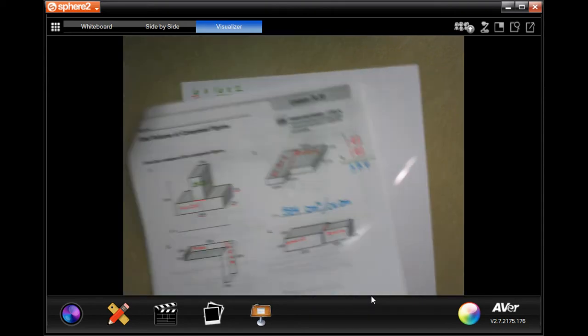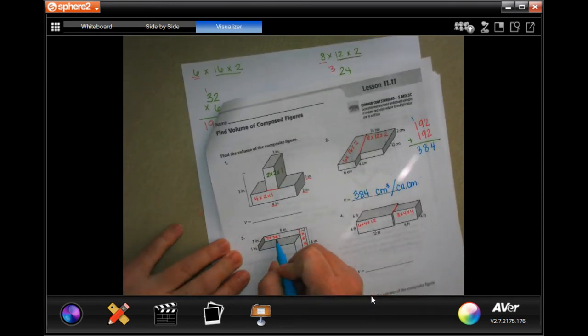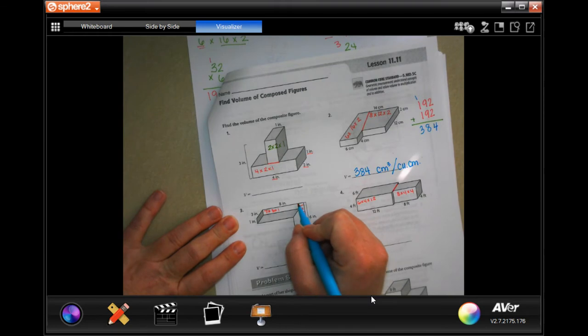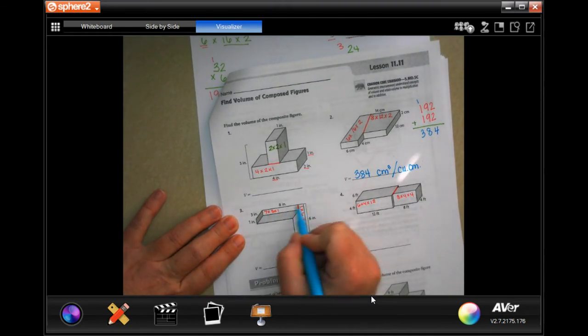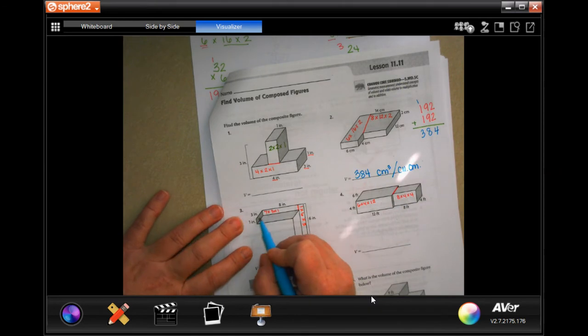We're going to do number three. This one says 7 times 3 times 1. I cut this and the whole thing is 8 inches up here, but I had to take that 1 inch off, so now it's 7.